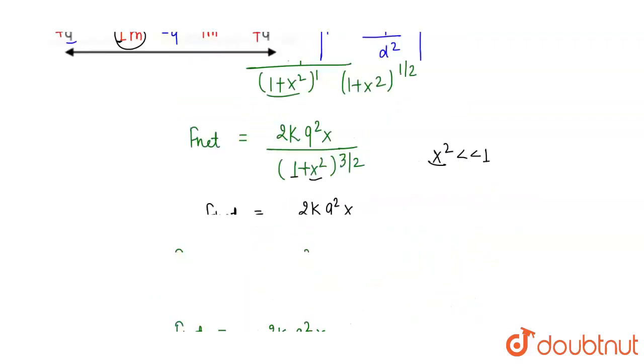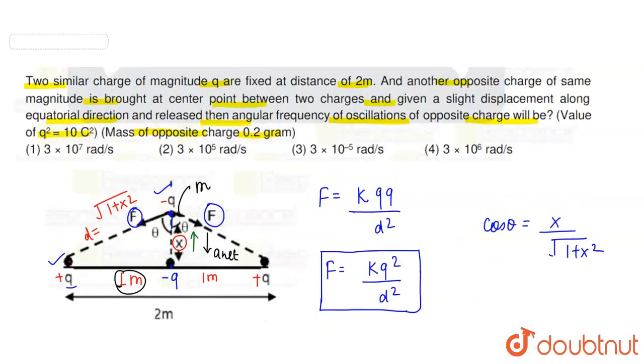Answer देख सकते हैं: 3 × 10⁷ radian per second — option 1 is the right answer of this question. Two concepts needed: electrostatics (force calculation) and SHM (comparing acceleration equation to get ω). Thank you.